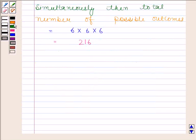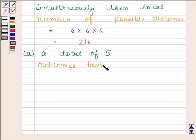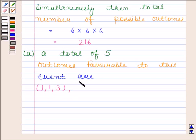Now in the A part, we have to find the probability of getting a total of 5. Now outcomes favorable to this event are (1,1,3), that means in the first dice we get 1, in the second dice we also get 1, and in the third dice we get 3. Then (3,1,1).